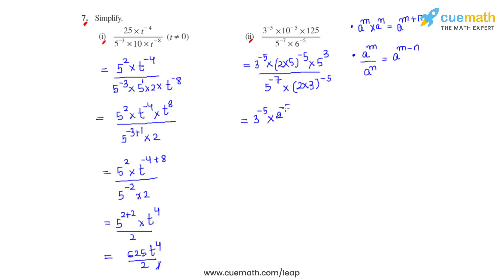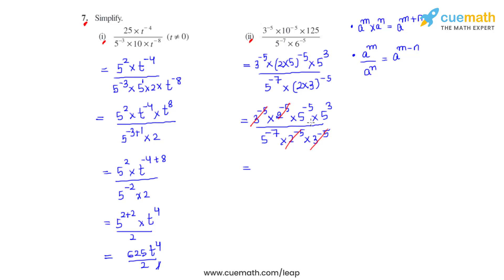So that gives us 3 raised to negative 5, with the power distributed individually to both factors 2 and 5. We can write it as 2 raised to negative 5 times 5 raised to negative 5, times 5 raised to 3. Now let's cancel whatever gets cancelled. We have 3 raised to negative 5 and 3 raised to negative 5, which cancel. We have 2 raised to negative 5 and 2 raised to negative 5, which also cancel. So now we have 5 raised to negative 5 times 5 raised to 3; the bases are the same, so the powers get added.